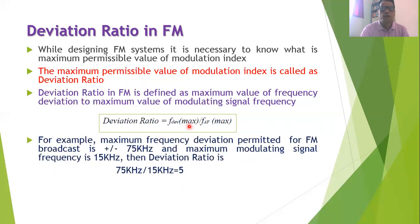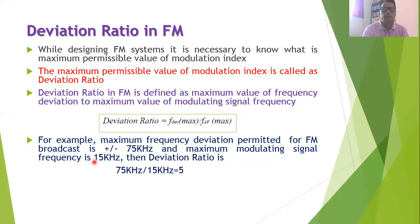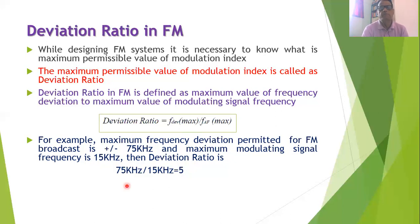For example, if the maximum frequency deviation permitted for FM broadcast is plus or minus 75 kHz and the maximum modulating signal frequency permitted is 15 kHz, then the deviation ratio equals 75 kHz divided by 15 kHz, which equals 5.